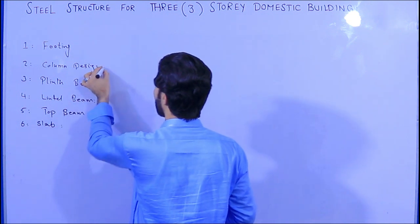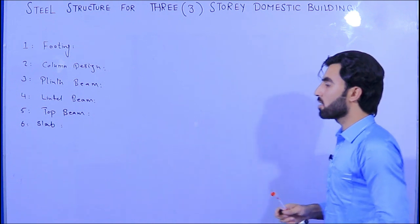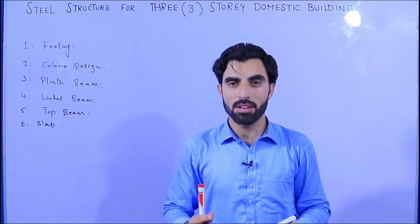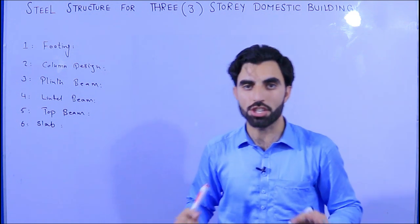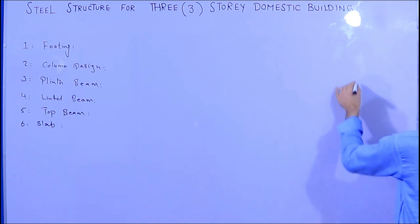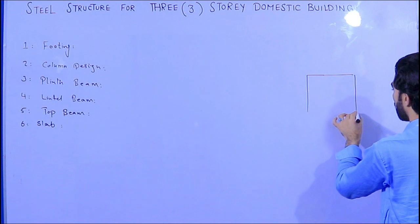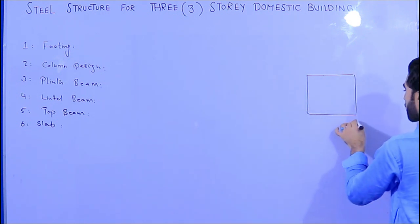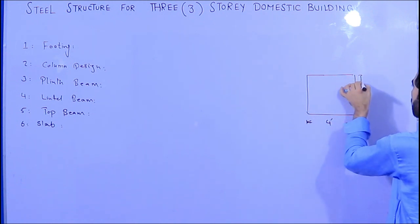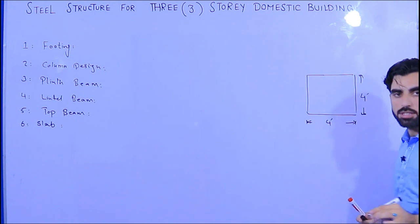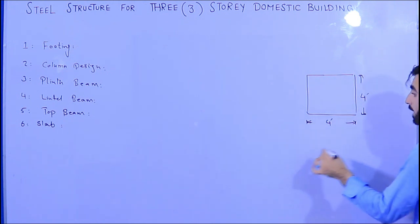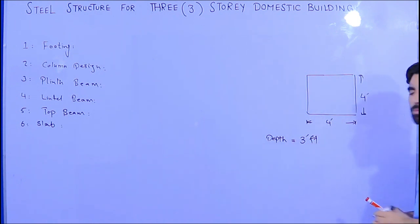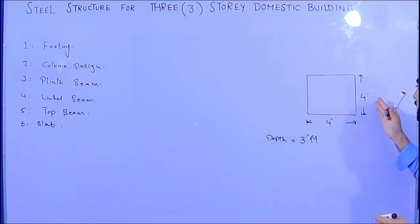The first topic is footing — its steel structure design, size, and depth. For this three-story domestic building, the size of the footing was four by four feet, and the depth of the footing was three feet.